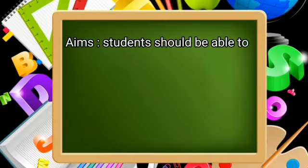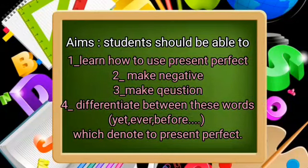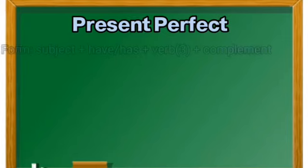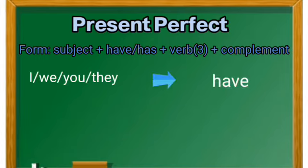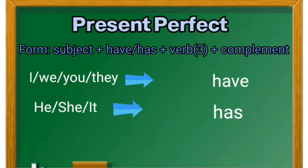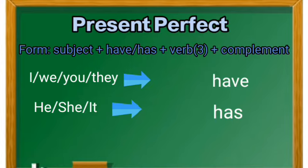Assalamualaikum warahmatullahi wabarakatuh. أعزائنا طلاب الصف التاسع، أهلاً وسهلاً بكم في درس جديد من دروس اللغة الإنجليزية. اليوم سوف نتحدث لكم عن زمن جديد وهو الحاضر التام — Present Perfect. الشكل: Subject (الفاعل) + have/has (الأفعال المساعدة) + Verb 3 (فعل في التصريف الثالث) + Complement (التتمة).